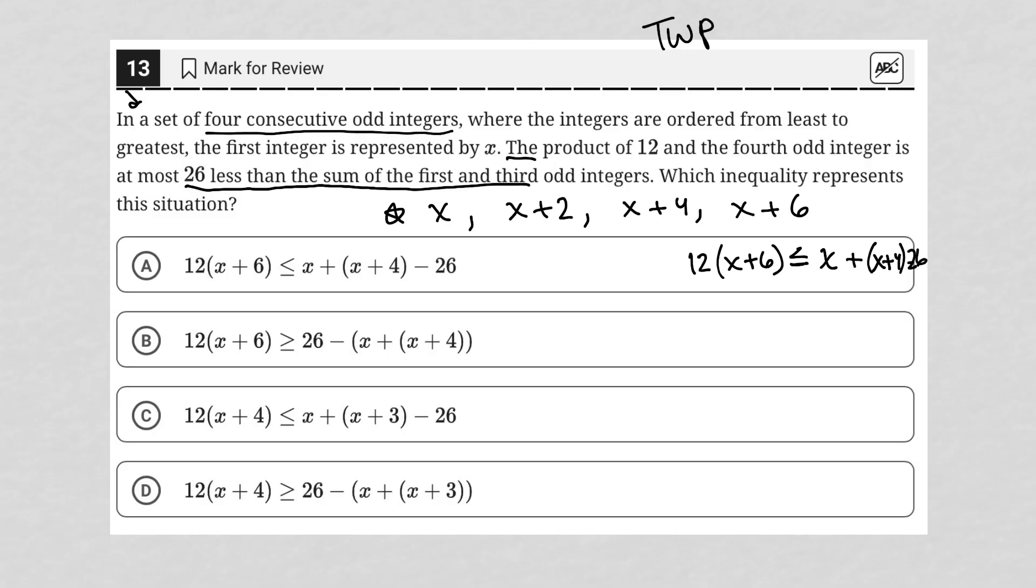So 26 less than the sum of the first and third odd integers. I'm running out of space, but I think you can see that. So my first odd integer, that's my third odd integer. And I'm then subtracting 26 from the sum of those, which inequality represents this situation. So let's see the answer choices now.